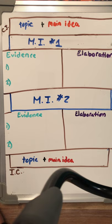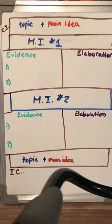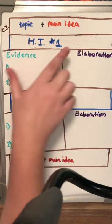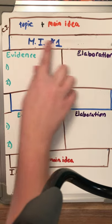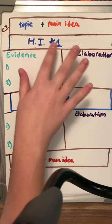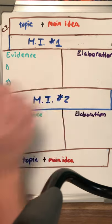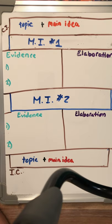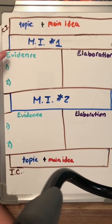Now we have our main idea one. The main idea one is the next paragraph. What is that paragraph all going to be about? If you are for cell phones, what is the main reason that you're going to talk about? If you are against it, what is that main reason telling you that no, they should not be allowed?